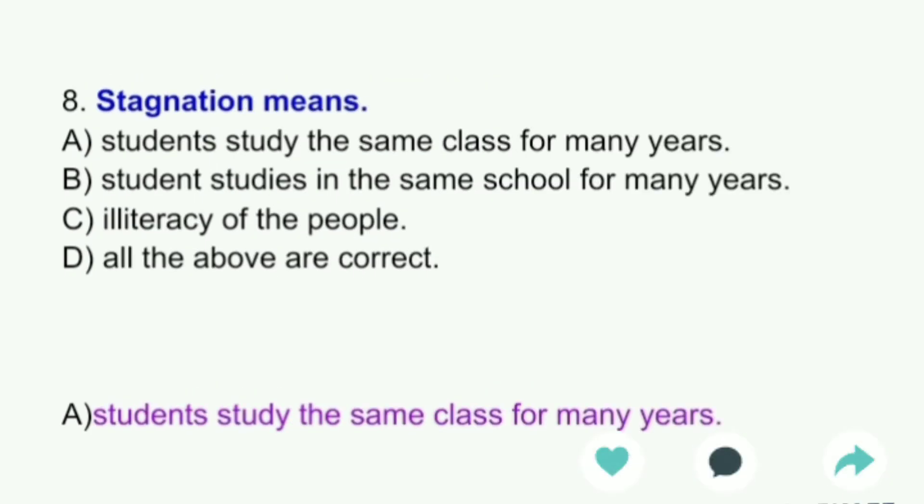Stagnation means: A) Students study the same class for many years, B) Student studies in the same school for many years, C) Illiteracy of the people, D) All the above are correct. The answer is A, students study the same class for many years.